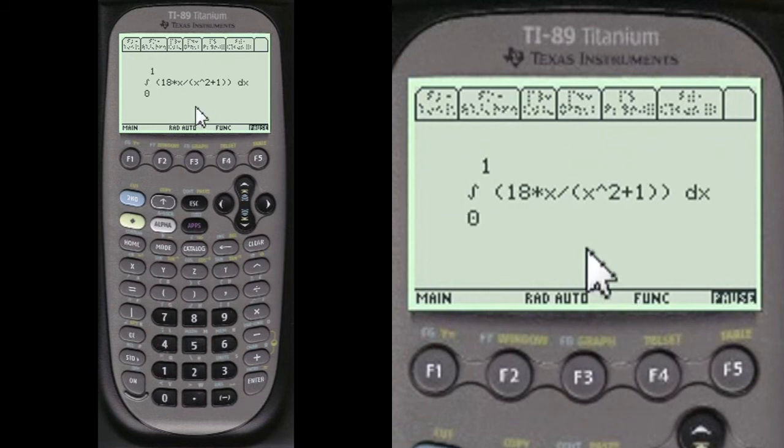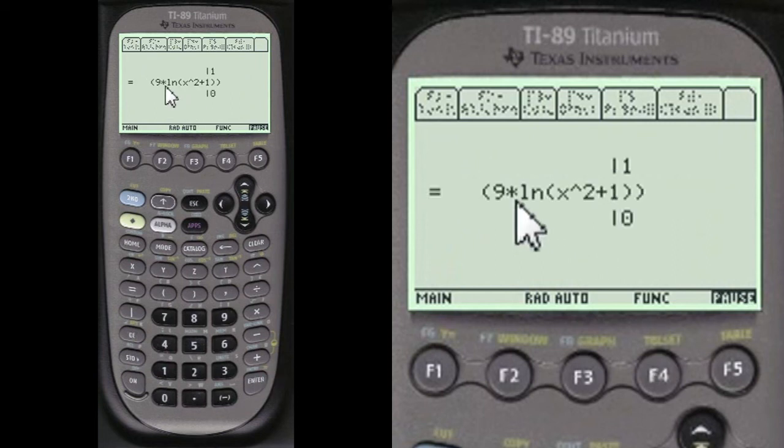Now we're doing the integral of that answer with over 0 and 1 limits. So we do the integral of that, which equals 9 times log of x squared plus 1. And over 0 and 1.